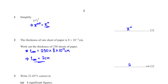The thickness of one sheet of paper is 8 times 10 raised to the power negative 3 centimeters. Work out the thickness of 250 sheets of paper. We multiply 250 by the thickness of one sheet, which is 8 times 10 to the power negative 3 centimeters. By typing this into the calculator, we get 2 centimeters.